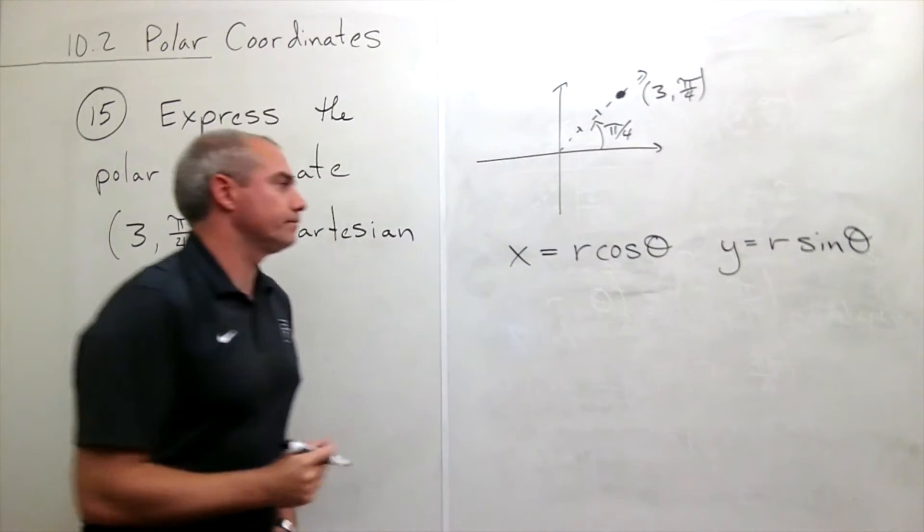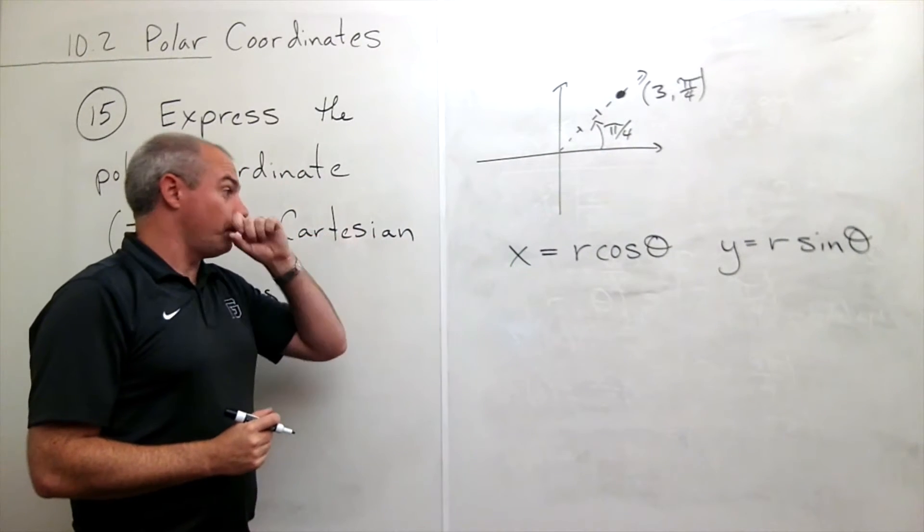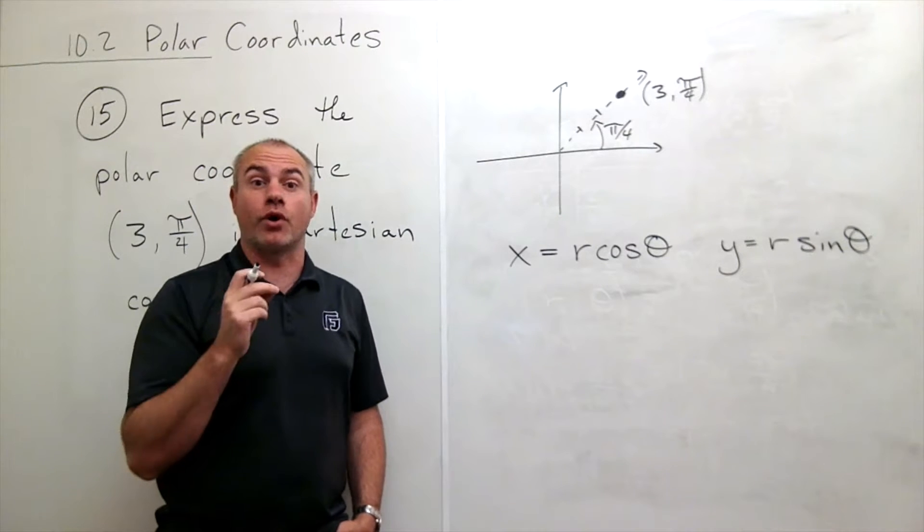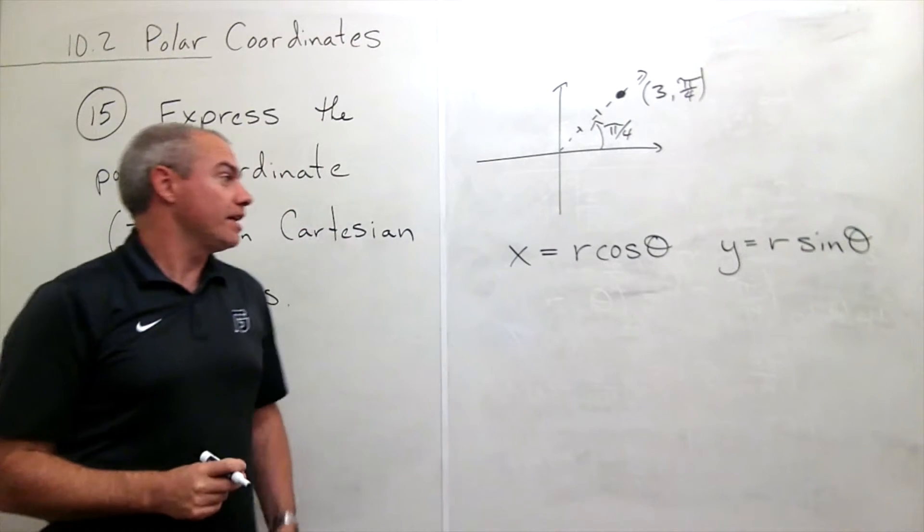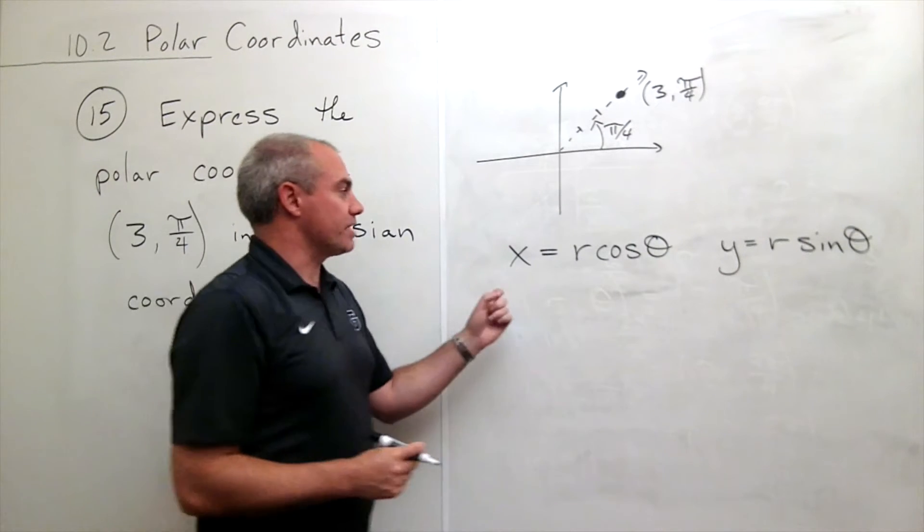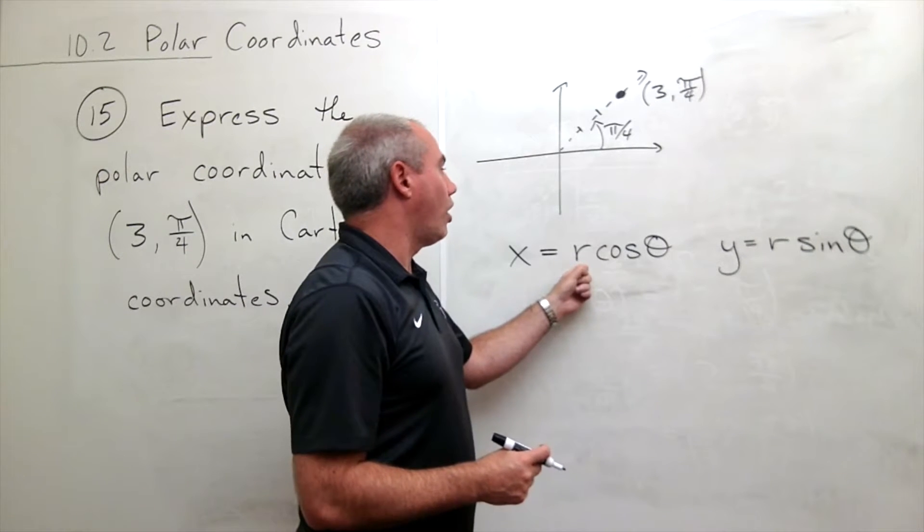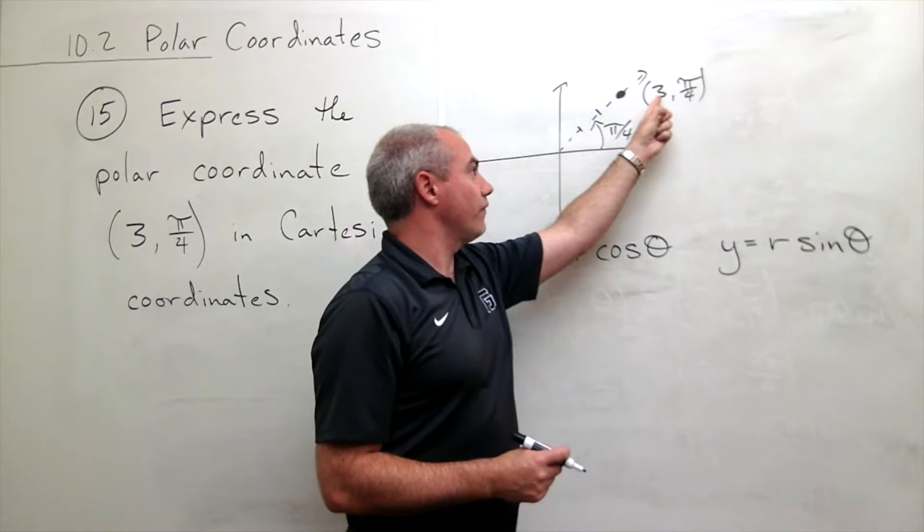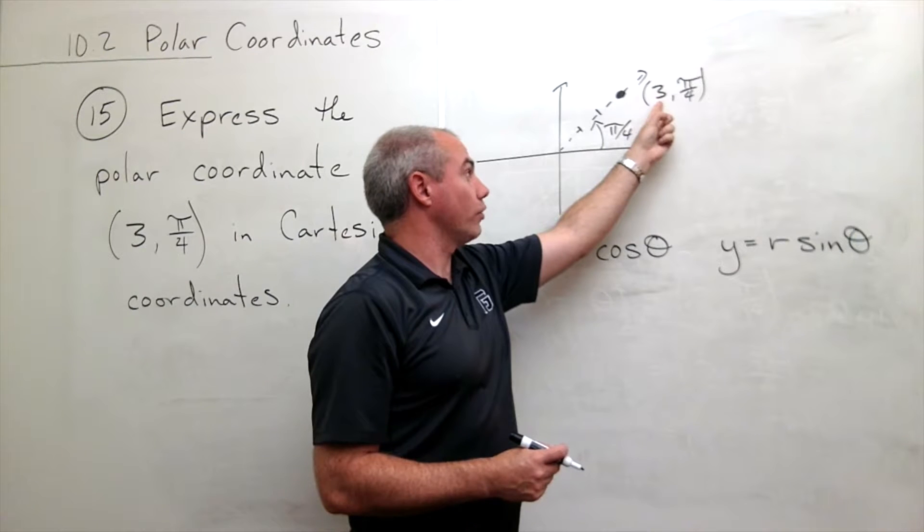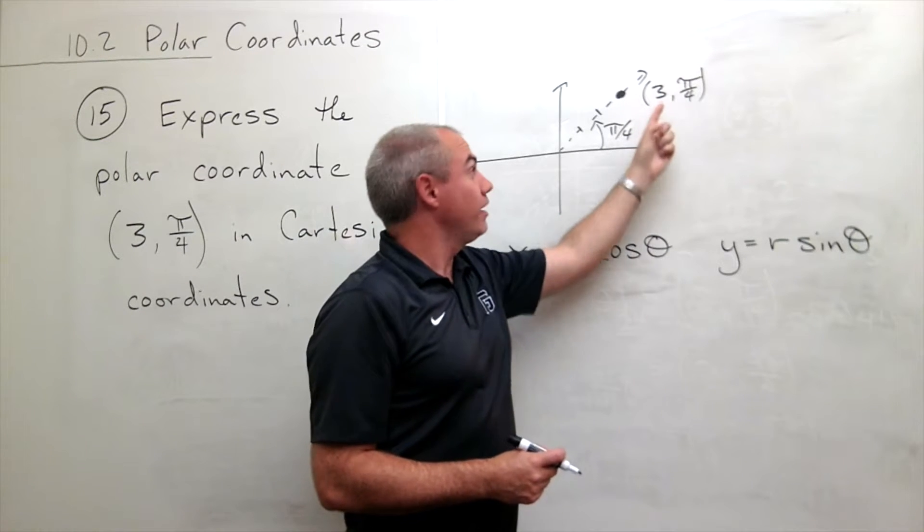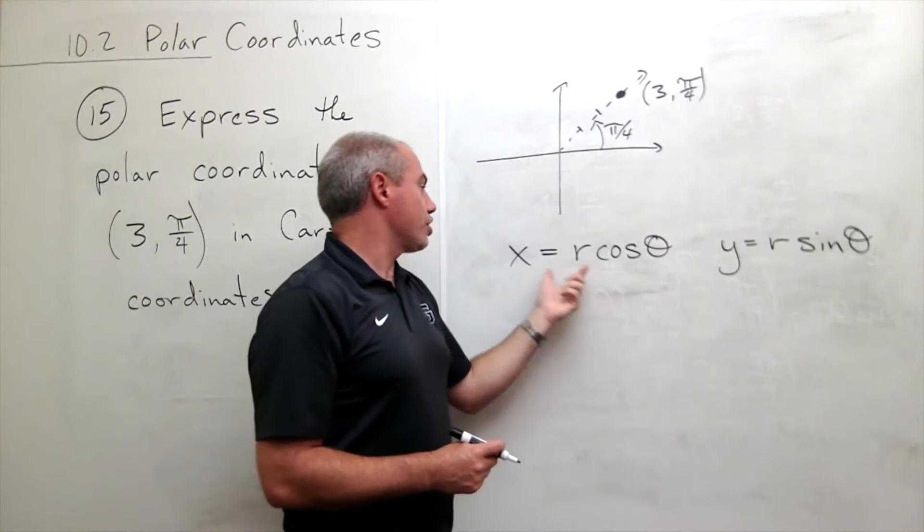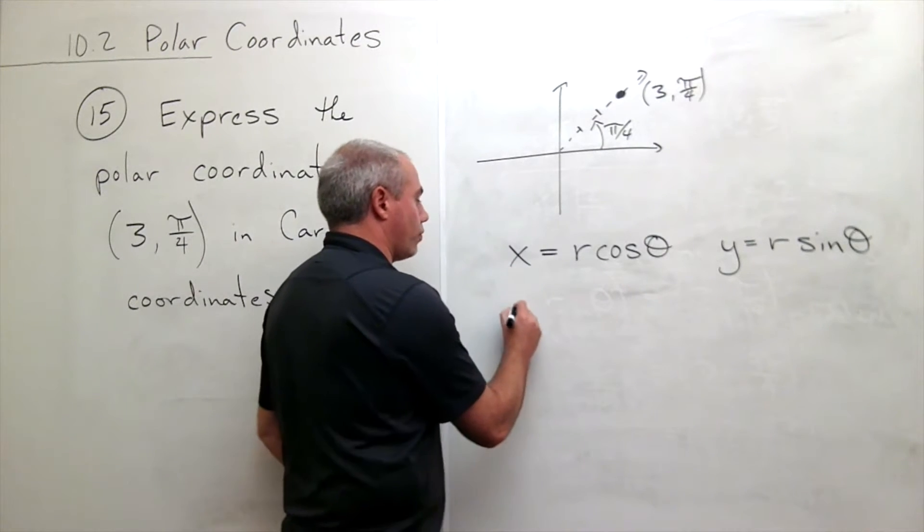And we know that y is the same thing as r sine of θ. Okay, this is what's going to help me get my x and y coordinate for Cartesian coordinates. I know what r is—r in this case is the first piece of my polar coordinate, which is 3, and θ is π/4.